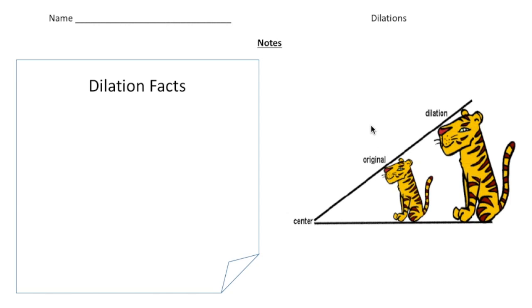Hey everybody, Dr. Nelson here. This is a lesson on something called dilations. A dilation is a type of transformation. So far you've learned about translations and reflections and rotations. A dilation is just another form of a transformation. Take notes on the first few pages and then there'll be some problems for you to try, and at the end you can see how you did.